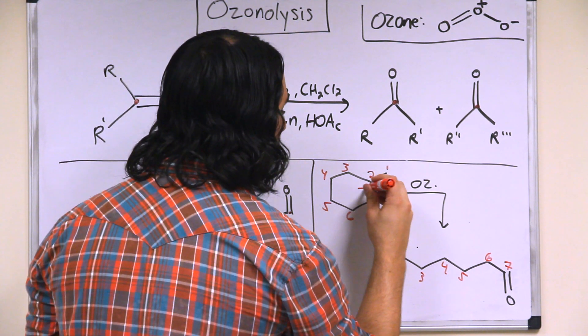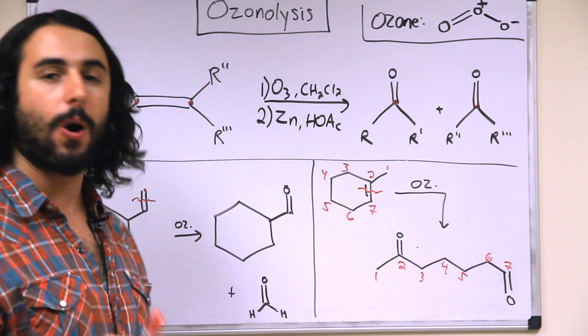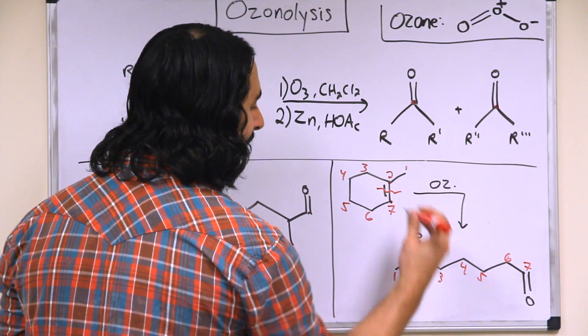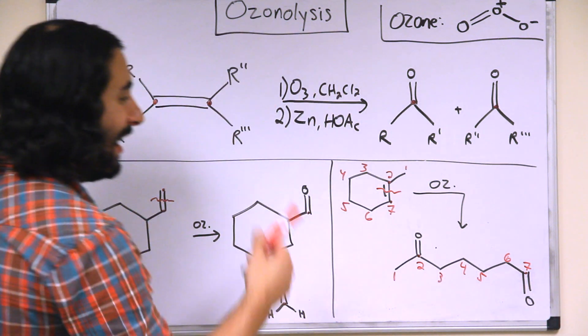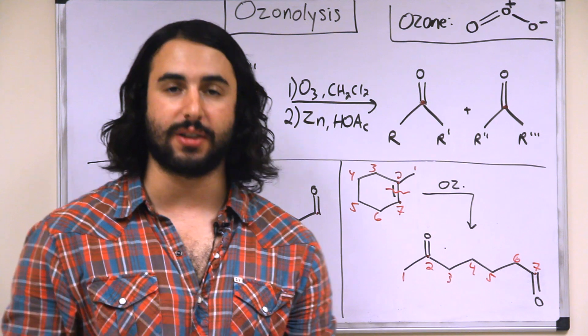If we cleave this double bond and pull that molecule apart, we know that the resulting carbonyls when we draw the linear product must be on carbons two and seven, because those were the carbons that were participating in the double bond. So that's just a trick to help you draw the correct ozonolysis product.